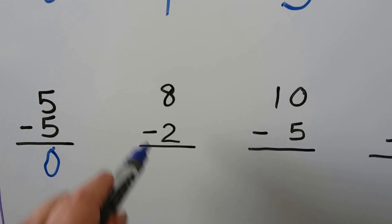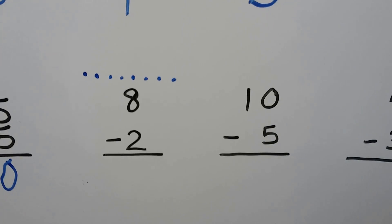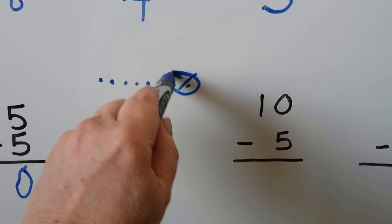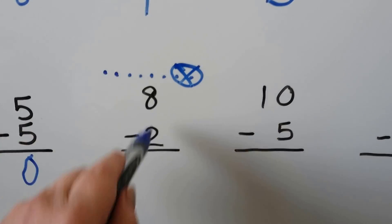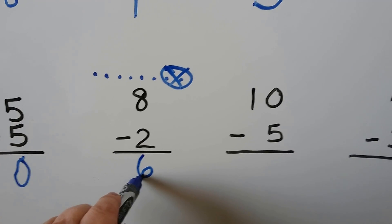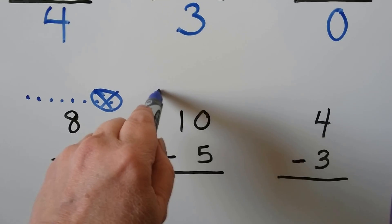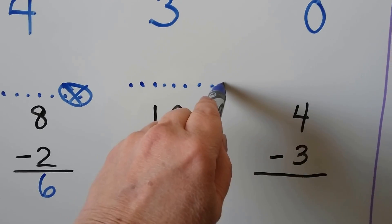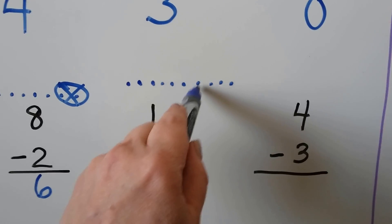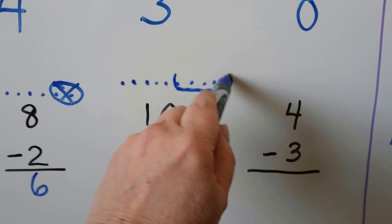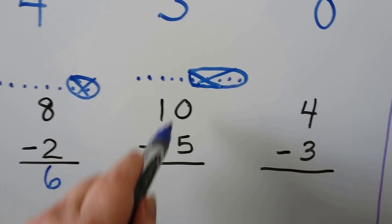Eight minus two — we can make eight dots and take away two. Count how many are left: six. Ten minus five — we can make ten dots and take five away. Count how many are left: five.